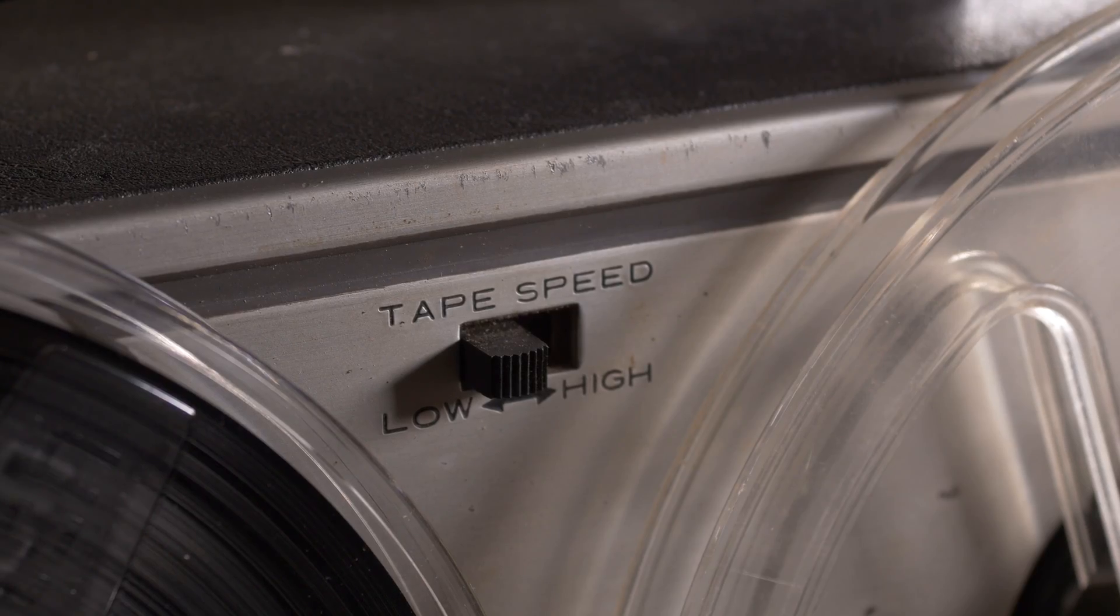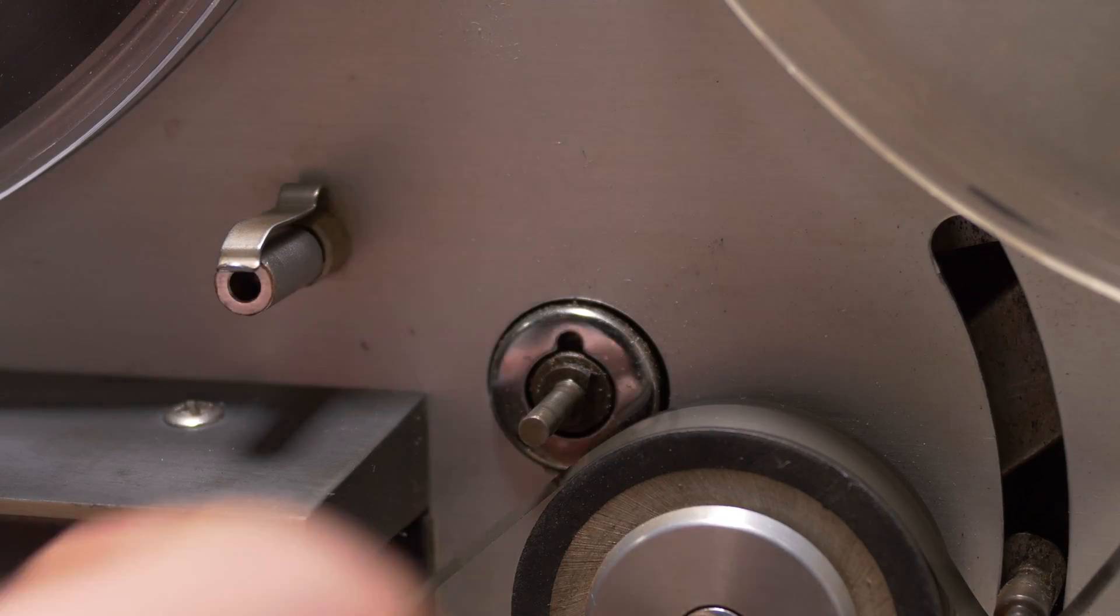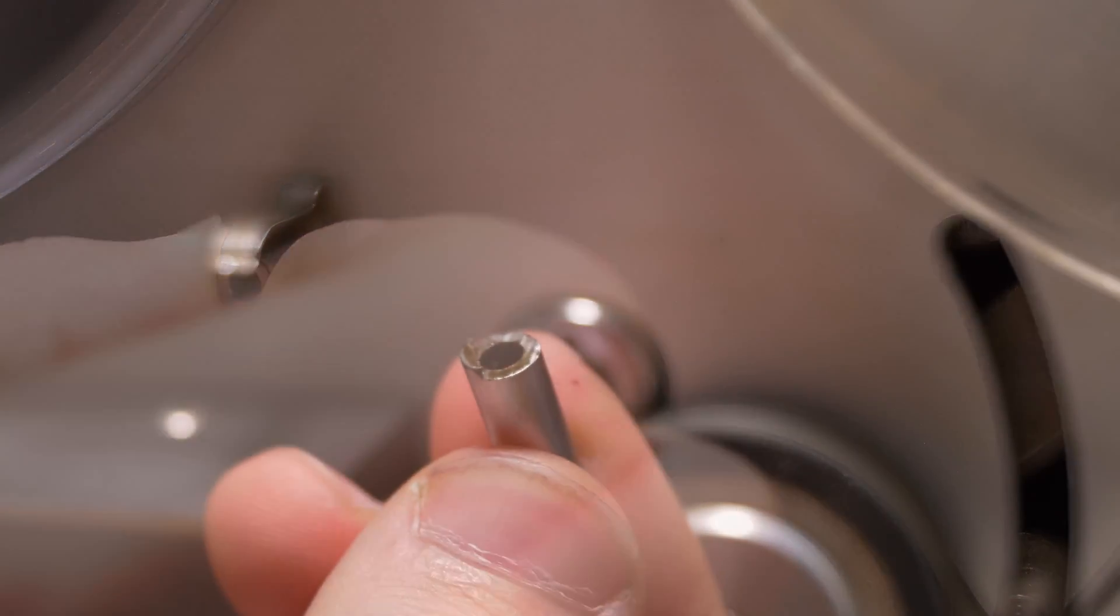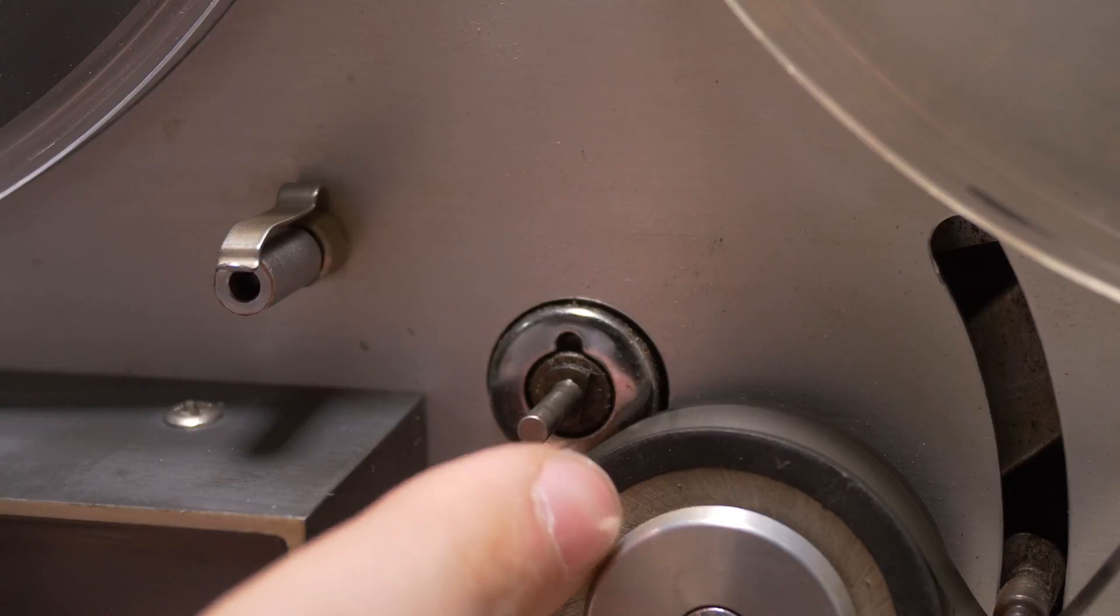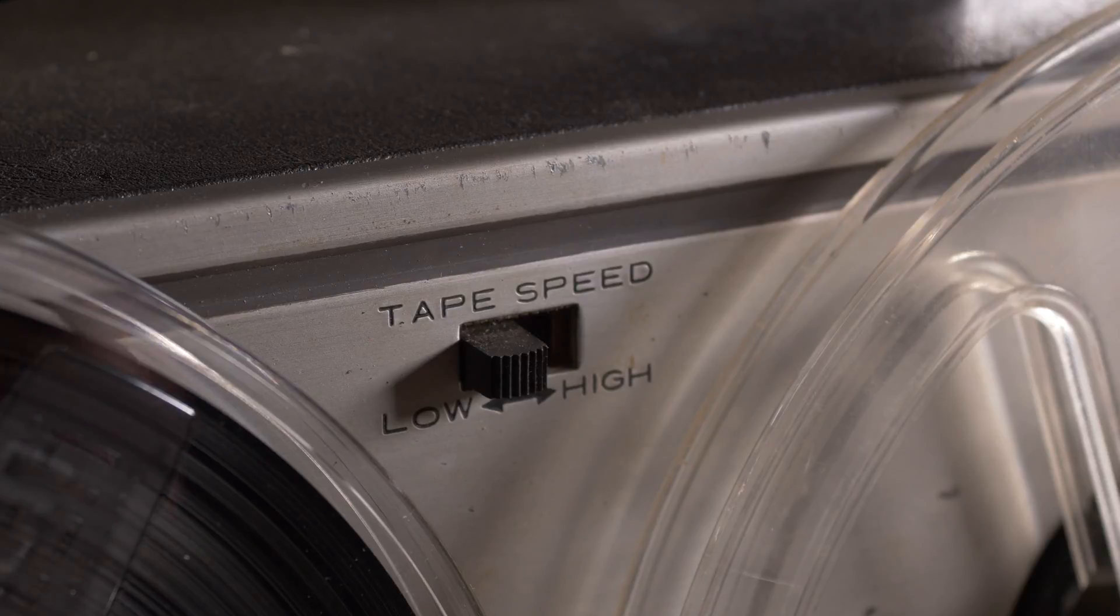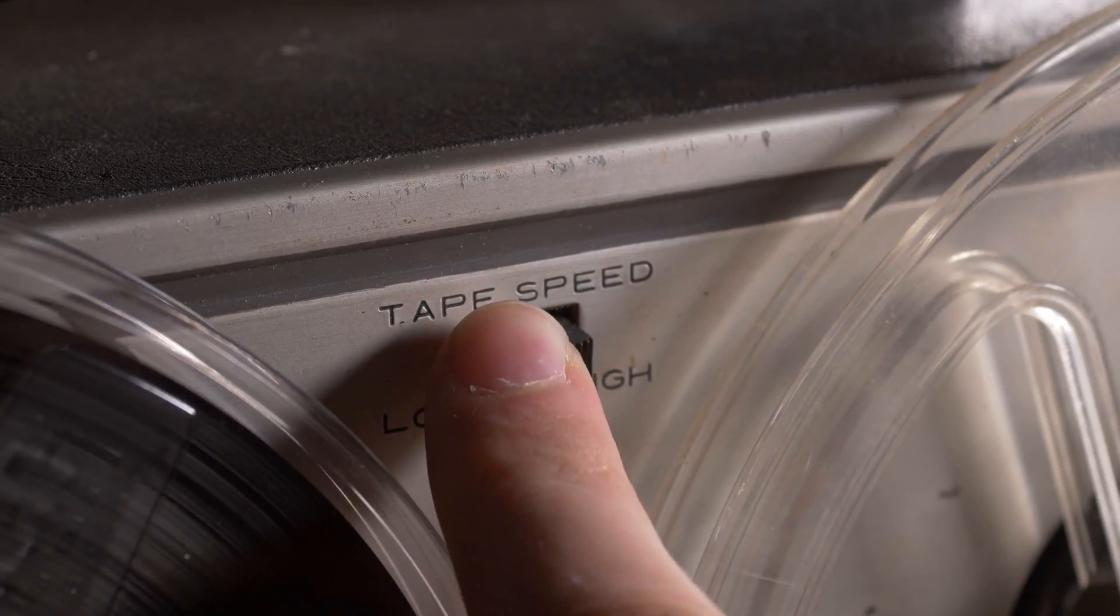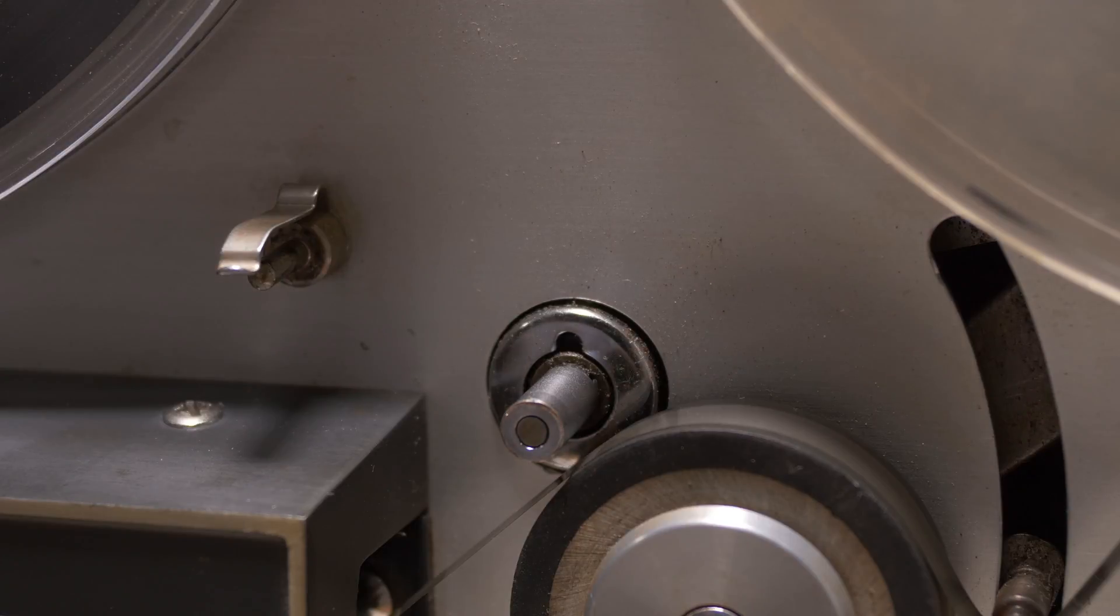Although there are only two settings on the tape speed selection switch, this machine can actually do three different tape speeds. That is made possible by using a bushing that you put on the capstan, the part of the mechanism that pulls the tape through. This changes the ratio between the motor and the capstan, allowing three different speeds by either using the slow speed, the slow speed with the bushing, and the high speed with the bushing. This covers all three standard tape speeds.